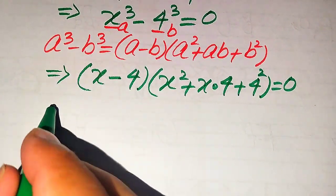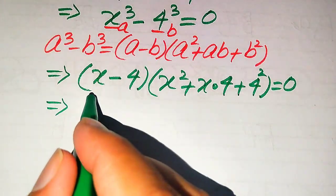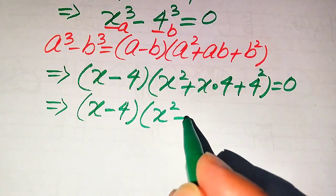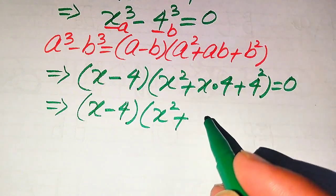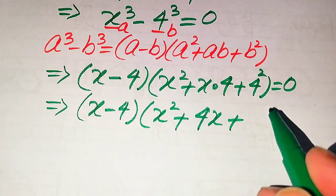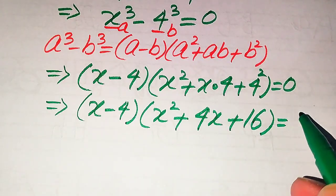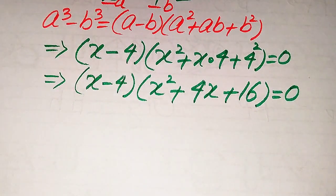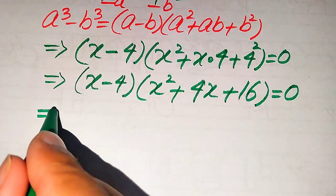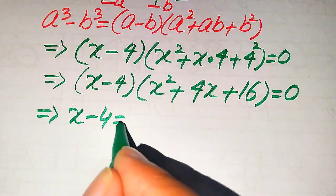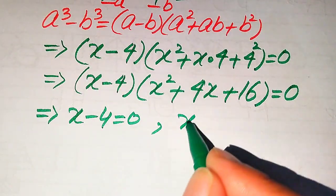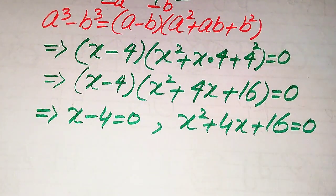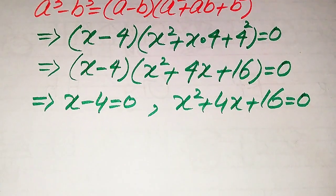After simplification, it is written as x minus 4, times x squared plus 4x plus 16, and this whole equation is equals to 0. We divide this into two cases: the first case is x minus 4 equals 0, and the second case is x squared plus 4x plus 16 equals 0.